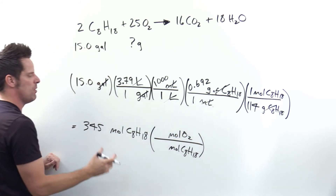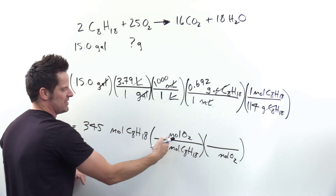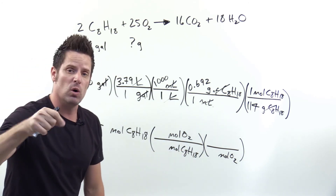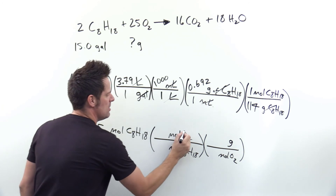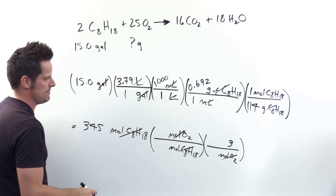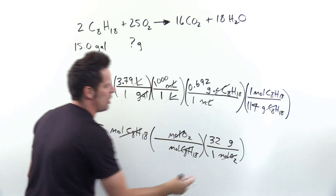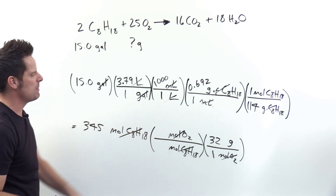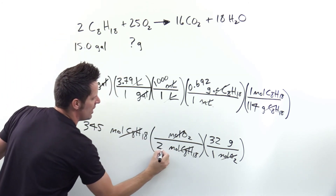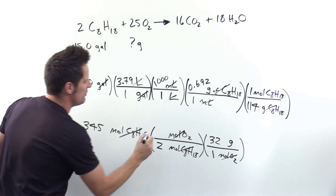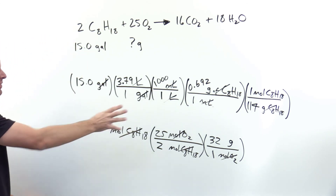Can moles of O2 and grams of O2 touch? Yes — moles and grams of the same substance can touch — so I put grams of O2 in the numerator. Now I fill in the numbers: one mole of O2 weighs 32 grams (16 per oxygen × 2 oxygens). The coefficients from the balanced equation give the mole ratio: 2 moles of octane for every 25 moles of O2. These coefficients are the mole-to-mole ratios for all reactants and products.